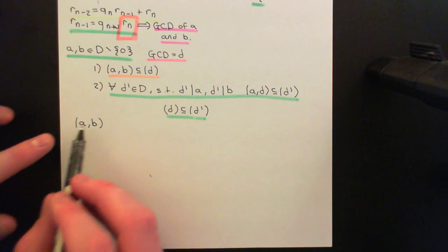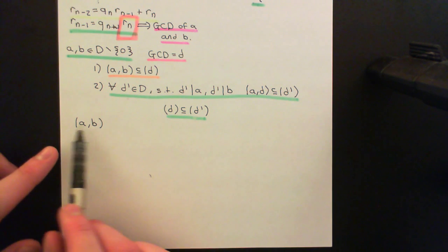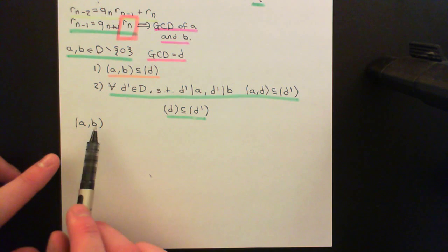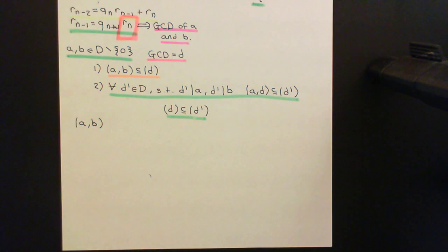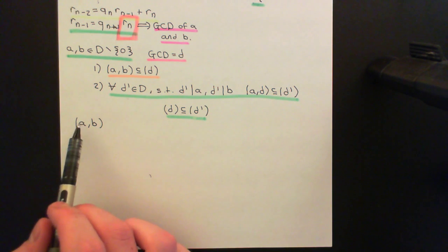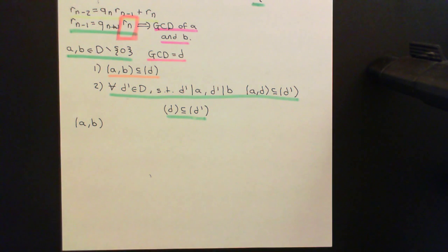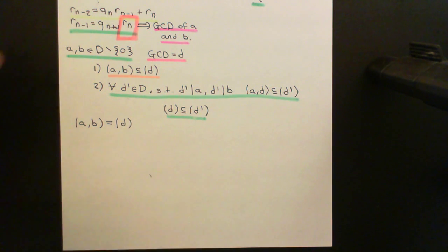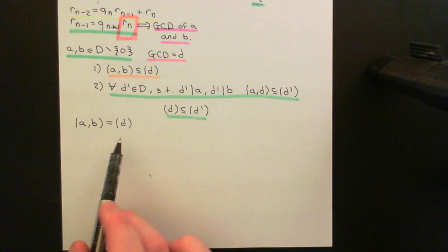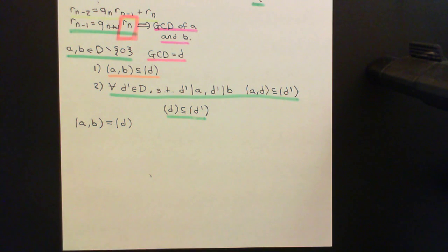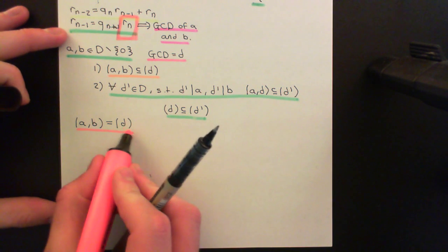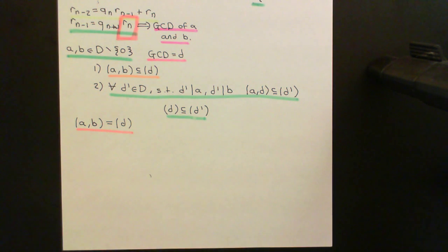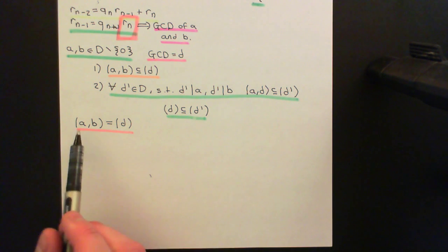If it happens that the ideal generated by A and B — which is all combinations of a multiple of A added to a multiple of B — if you can find some element D whose principal ideal is equal to this ideal generated by A and B, then you can instantly conclude that D is the greatest common divisor, or at least one of the greatest common divisors of A and B.